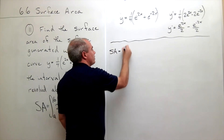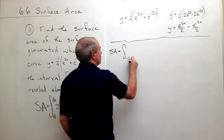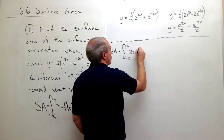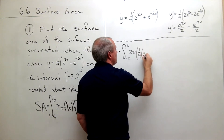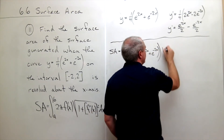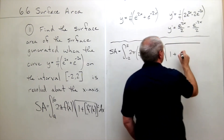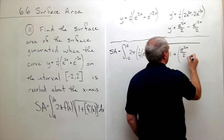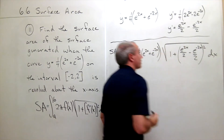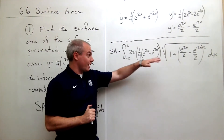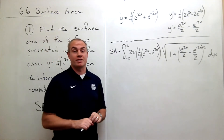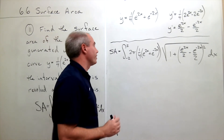Surface area equals the integral from negative 2 to 2 of 2 pi times the function — one-fourth of e to the 2x plus e to the negative 2x — times the square root of 1 plus the derivative function — e to the 2x over 2 minus e to the negative 2x over 2 — squared, dx. If we take this antiderivative and plug things in, we should get our surface area. This looks quite nasty, but we can simplify it and actually take an antiderivative.